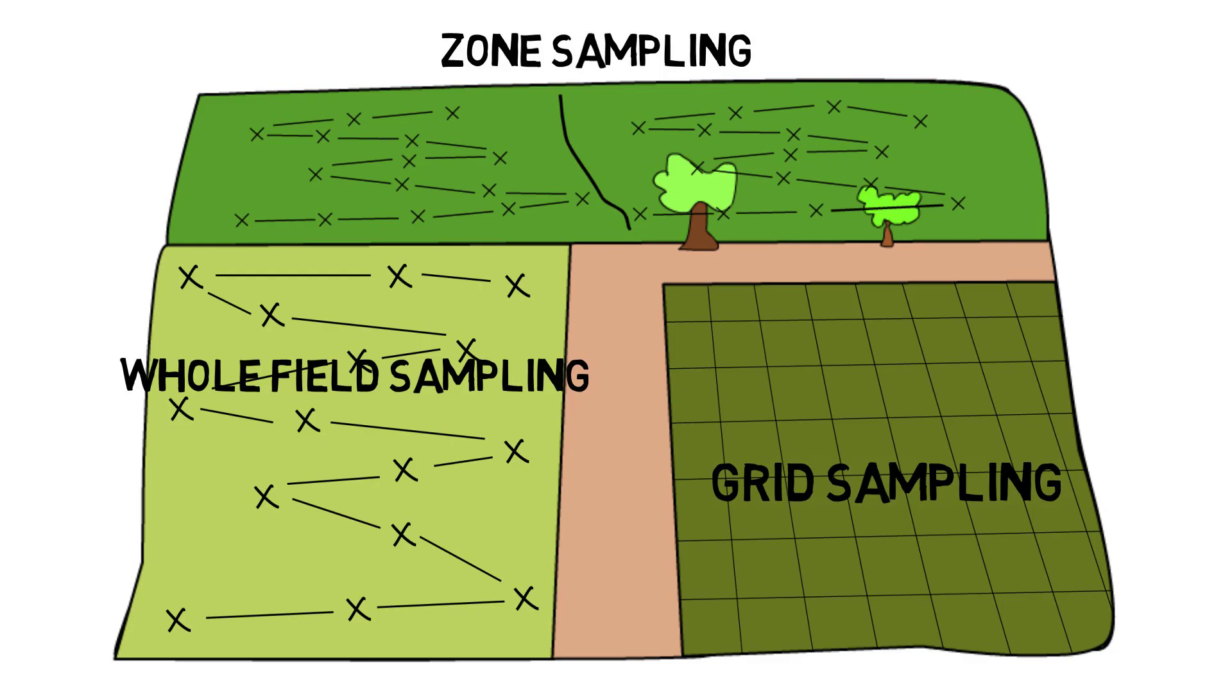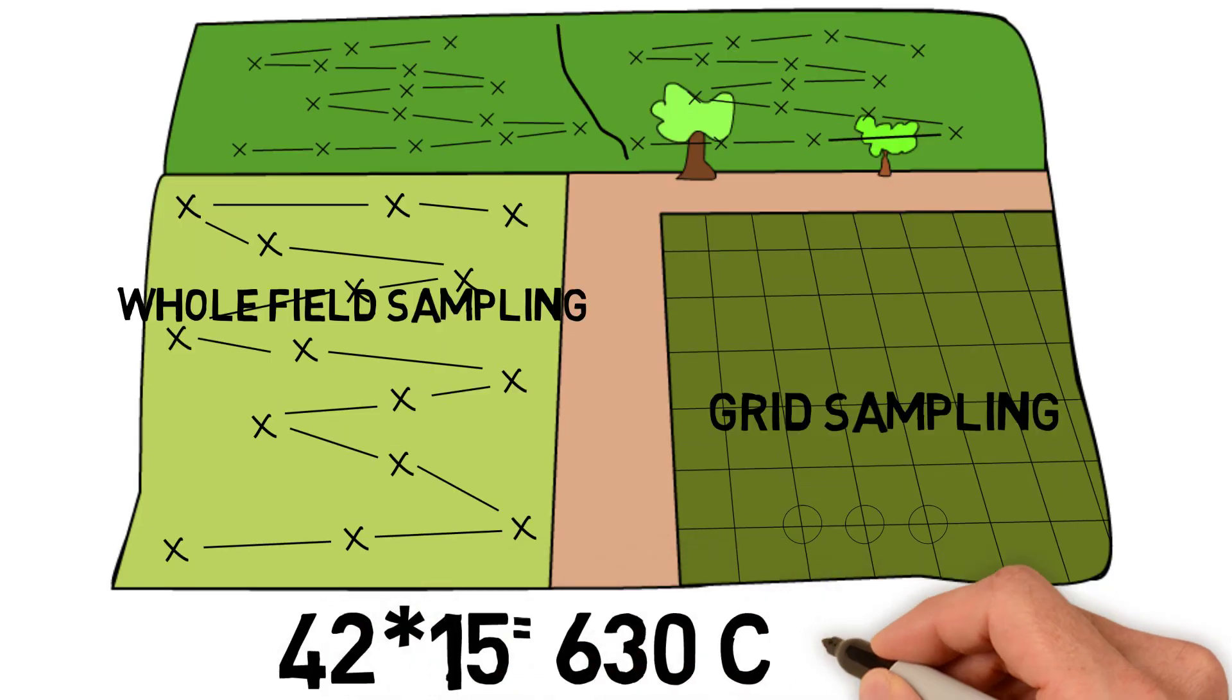Each square can represent any size of your choice. It could be 1 acre, 2 acres, 5 acres, 10 acres. It all depends on the resolution that you want in your map. Then you go to each intersect in the field, and then in a 10-foot radius around that point, you'll take 12 to 15 cores at random and make a composite sample.